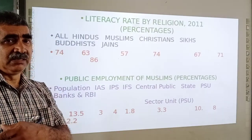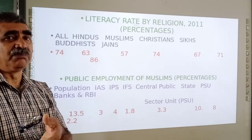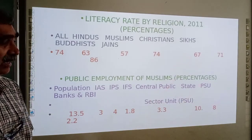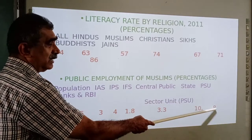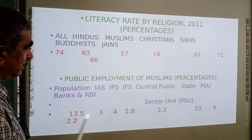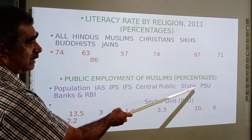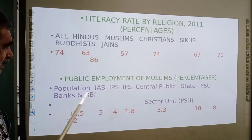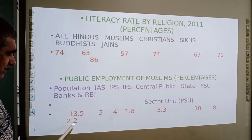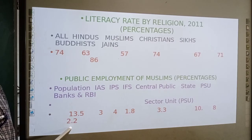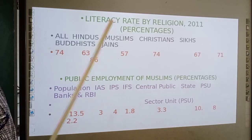For example, KSRTC and similar government departments and companies — Muslims represent about 8 percent there. Their population of India is around 13 percent, but nowhere do they come near that number in representation. In the state, they do not come near 10 percent. In banks and RBI, the Muslim population is only 2.2 percent. So this is the situation about the Muslim minority — they are marginalized, not given equal facilities, and not able to compete equally with others.